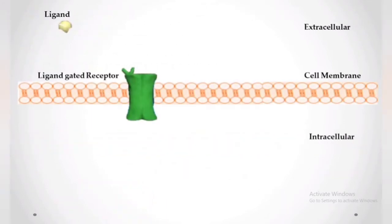Let's start from the ligand-gated receptor. Receptors have their specific binding site for the binding molecule or ligand. This model is also known as the lock and key model.